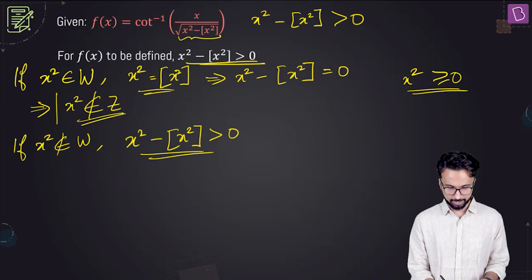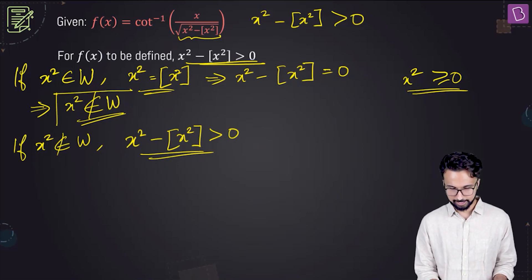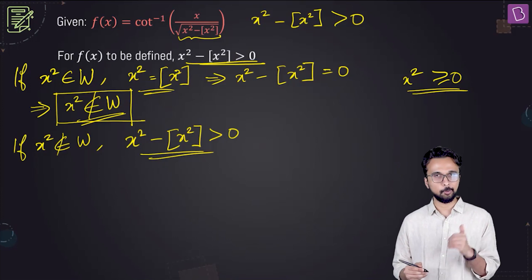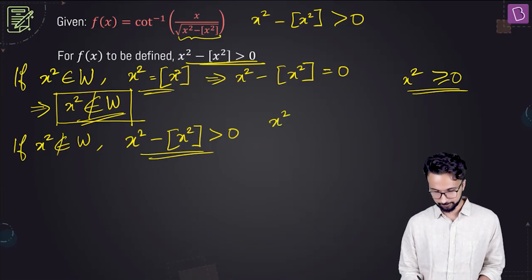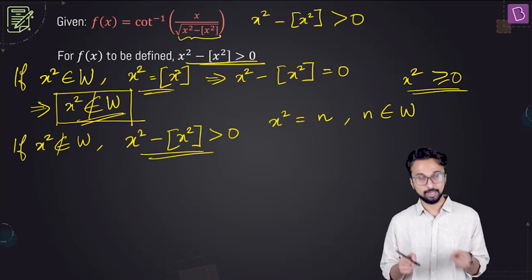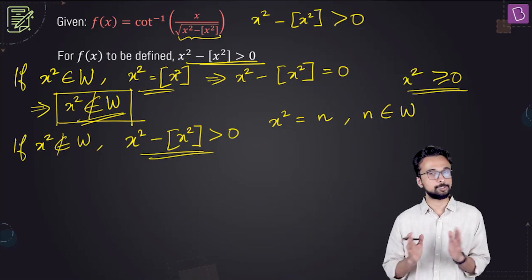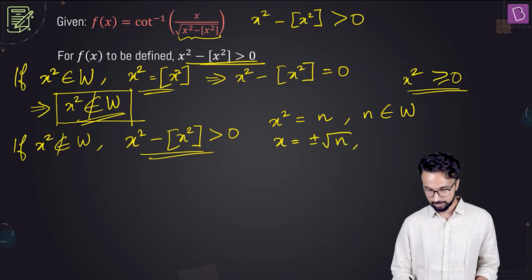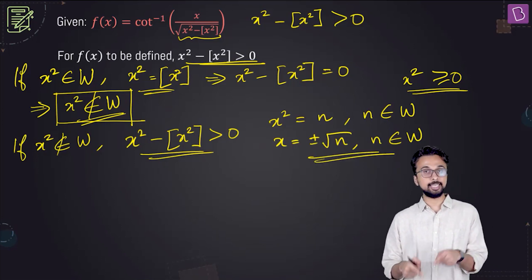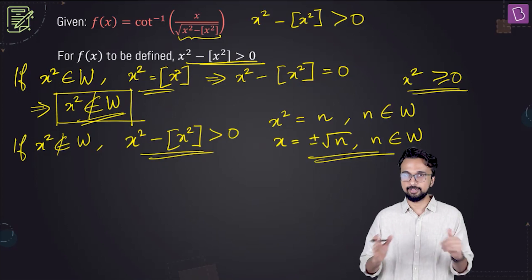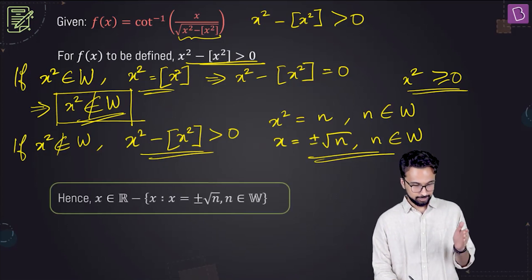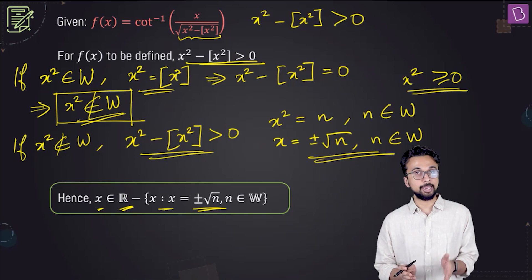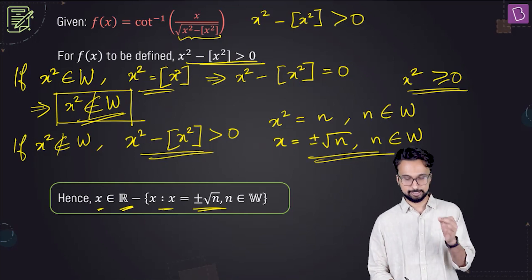So we conclude that x squared must not be a whole number. The cases to remove are x squared equal to n, where n is a whole number, which means x equals plus or minus root n, where n is any whole number. These are the cases to remove from the set of all real values. The domain is all real numbers except x equal to plus or minus root n for any whole number n.